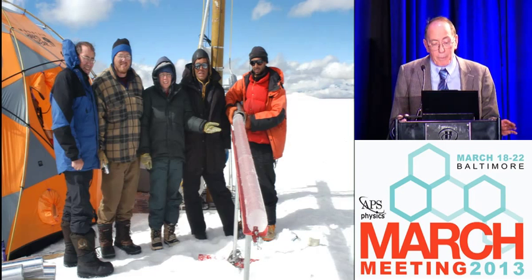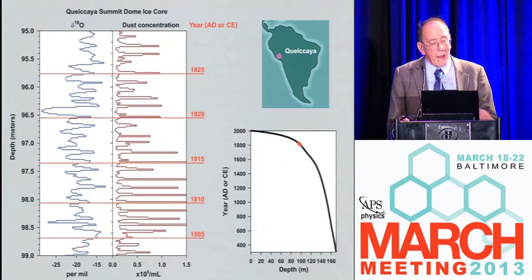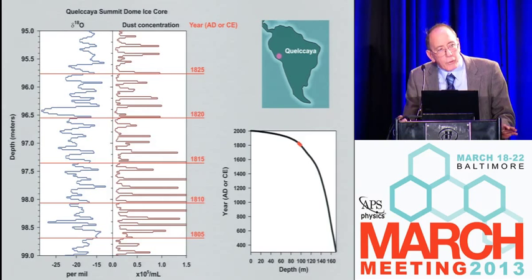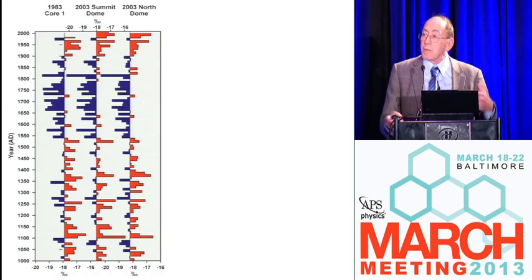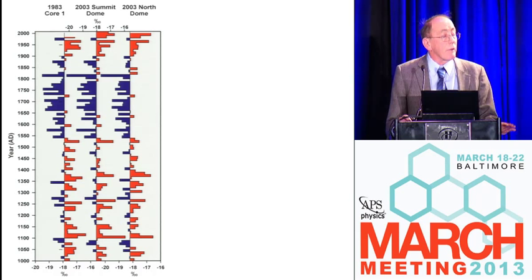So you drill through 168 meters and bring that core back, analyze it, and here's just one section to show you how the isotopes show us the annual variations as well as the dust — measure the thickness and you've got the precipitation. If you bring those back and analyze them, you can look at the last thousand years using five-year averages of isotopes, which is our temperature proxy. The reds are warm periods, the blues are colder.